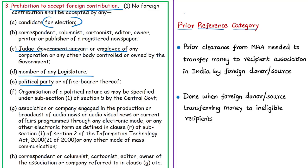The allegation against Open Society Foundations is that it funded NGOs and associations not registered under the Foreign Contribution Regulation Act. The international foundation is the foreign source, and it funded ineligible NGOs because they are not registered under FCRA — this amounts to a violation of the Foreign Contribution Regulation Act. For this reason, the foundation was placed under the watch list of the prior reference category.